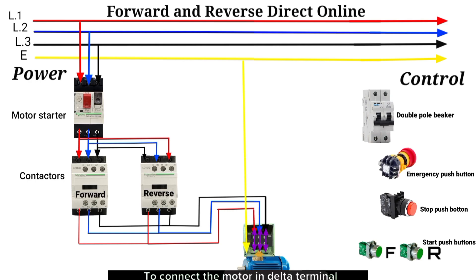To connect the motor in delta terminal connection, use these step connections: U1 to W2, V1 to U2, and W1 to V2.